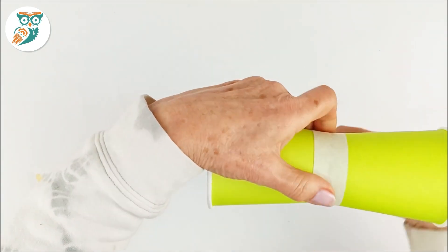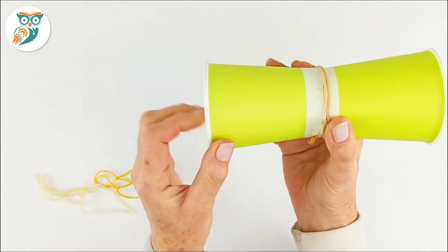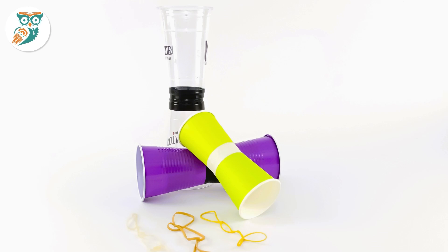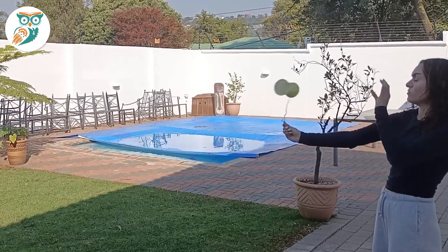Now to launch these you're going to take it like that, hold it with your thumb and just wrap it around a couple of times and then take it outside and launch it. Don't do this indoors, it goes far and it kind of gets a little wild. So there's our cups all ready to go and now we're going to take it outside, wind it up and then let it go.